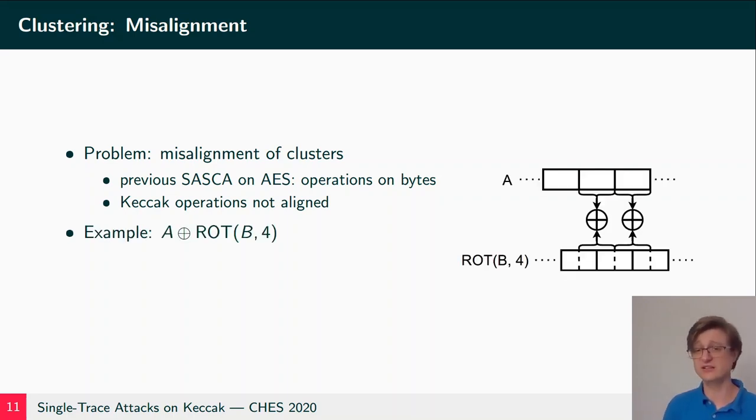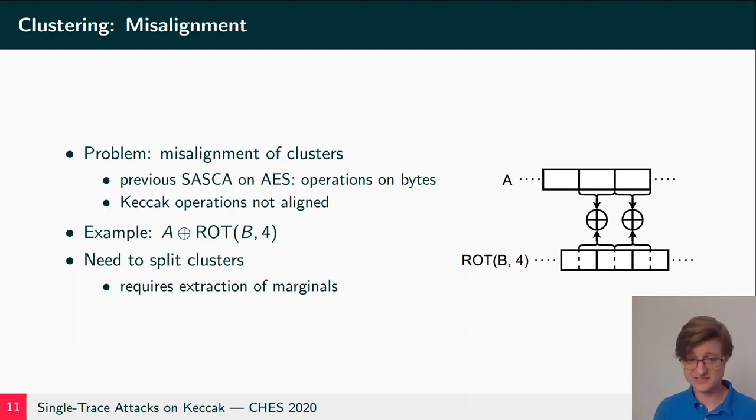So we have to XOR one cluster of A with parts of two clusters of B. What we have to do here is we need to split the clusters of B and we have to extract the marginals of the upper parts of one cluster and the lower parts of another cluster and combine them together. We lose some information on the joints there, but we have to truly look for that.